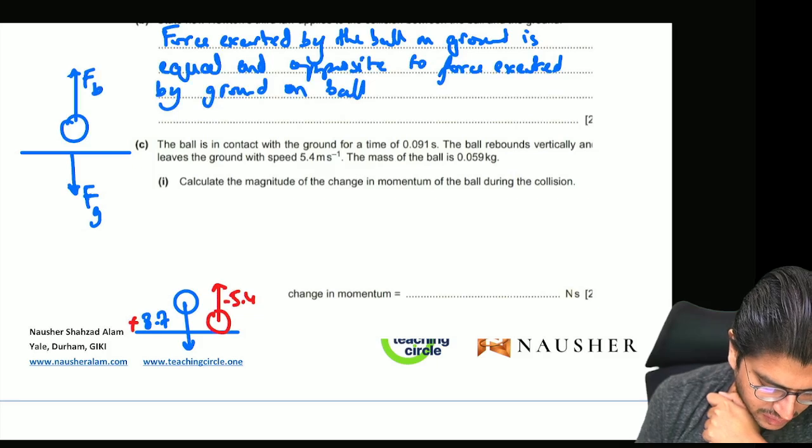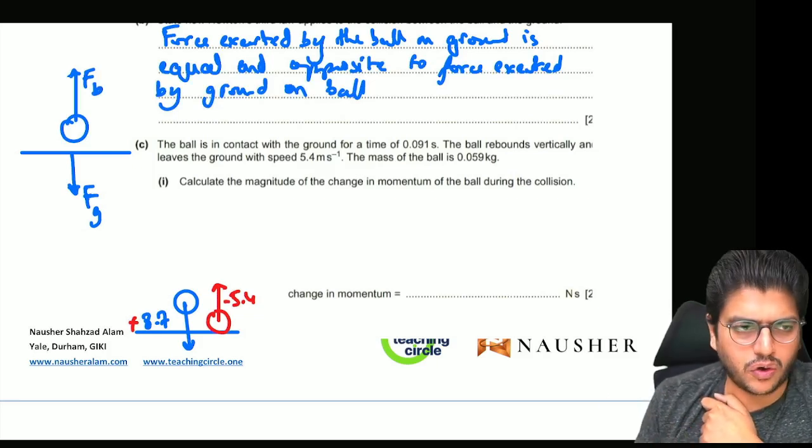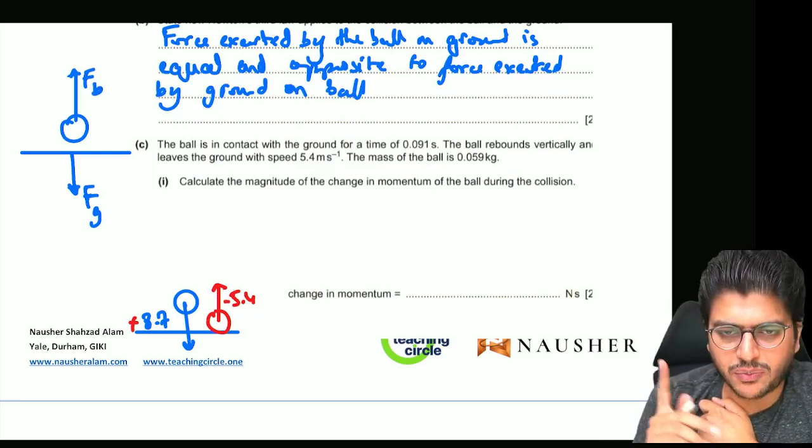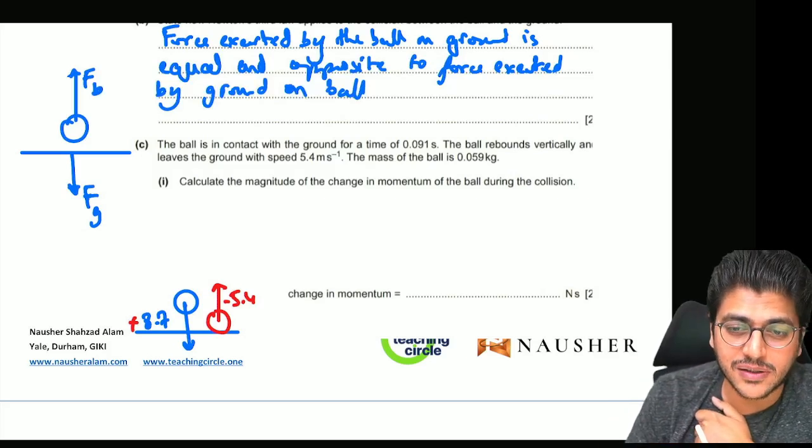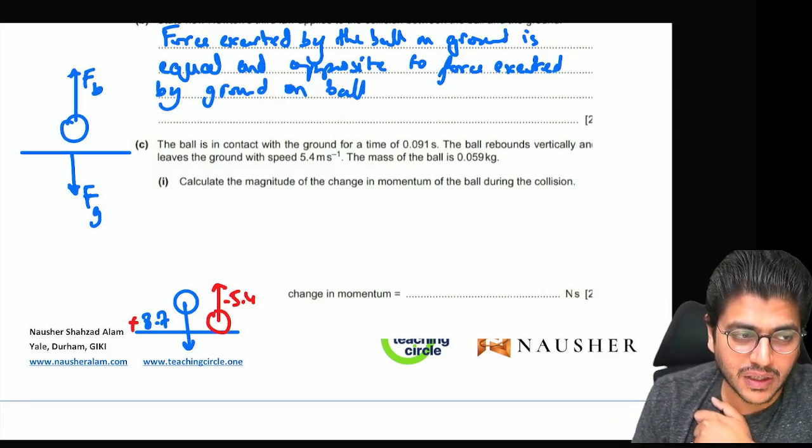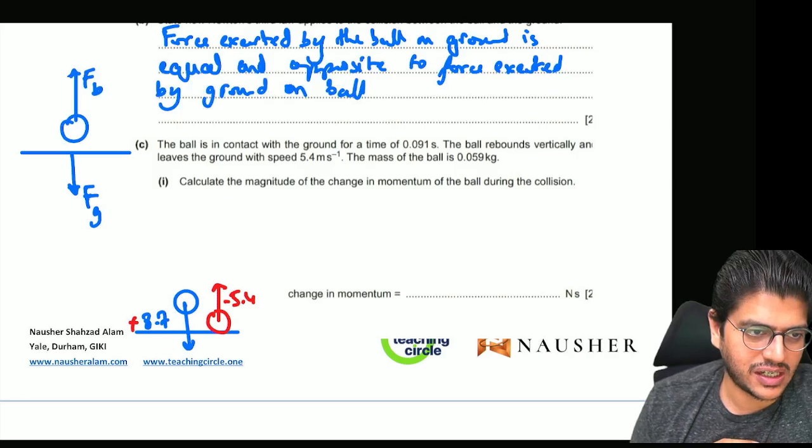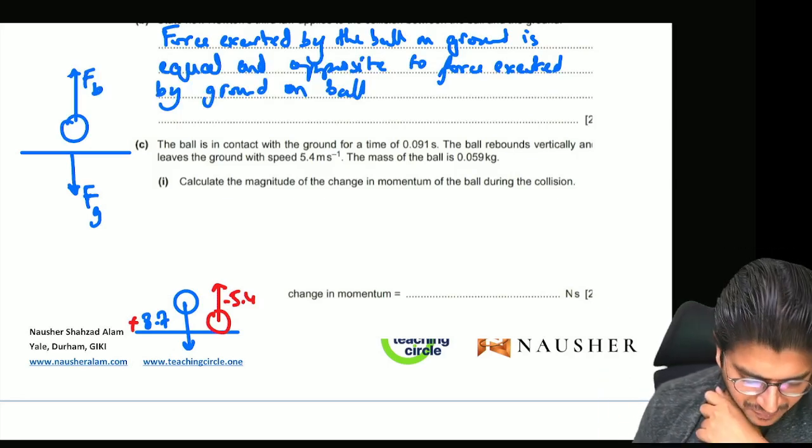It's up to you—you take this as plus and this as minus, that's completely your call. Or you take 5.4 as plus and 8.7 as minus, completely your call. But you have to change the sign because the answer will change if you do not take the sign into account, and that'll be the wrong answer.